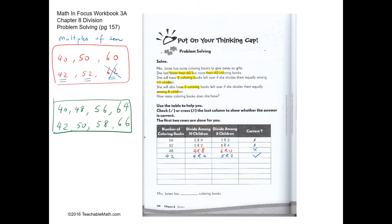Next, we make a list of multiples of 8. Similarly, what numbers when divided by 8 give a remainder of 2? So we will have 50 — when you divide 50 by 8, it gives you a remainder of 2. Also 58 — when you divide 58 by 8, it gives you a remainder of 2.